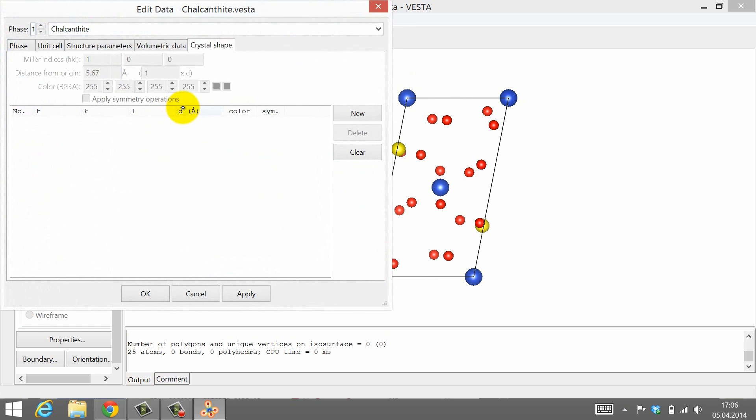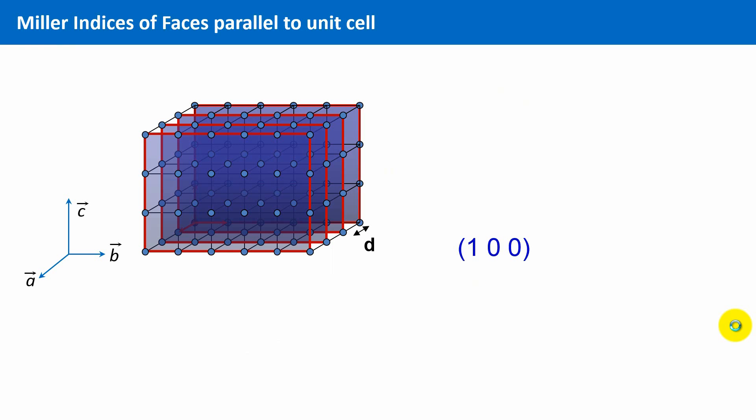In order to build the crystal shape, we need at least six crystal faces. We will start with those crystal faces that run parallel to the faces of the unit cell, namely those with the Miller indices 1,0,0 and 0,1,0 and 0,0,1.